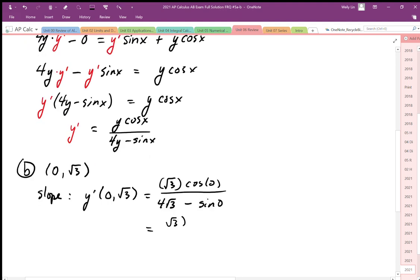If I want to draw that in, cosine of 0 is going to be 1 there over 4 root 3 minus sine of 0 is going to be 0. The y positioning on the unit circle is 0 so I get 0.